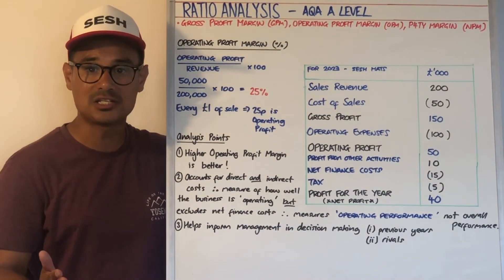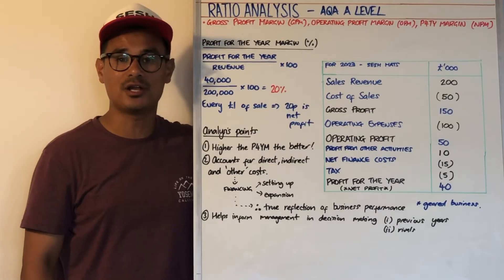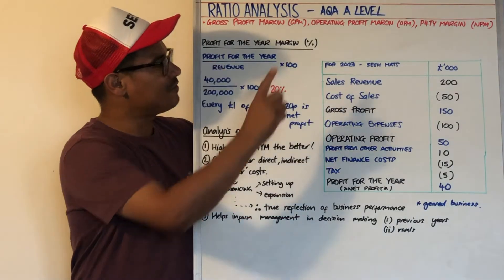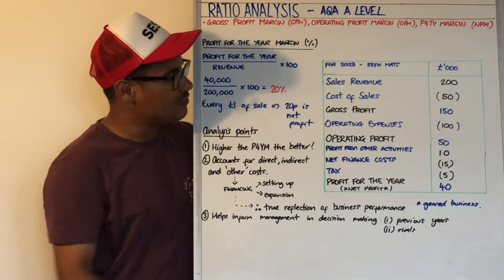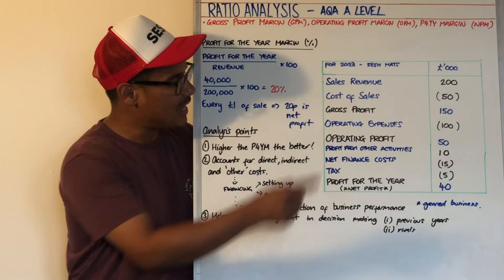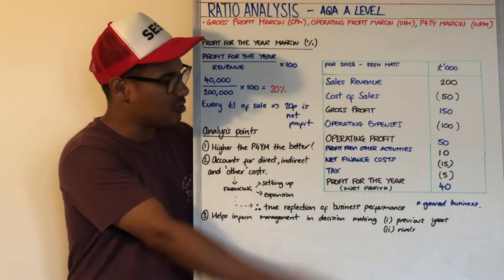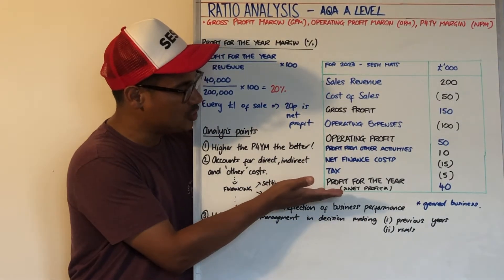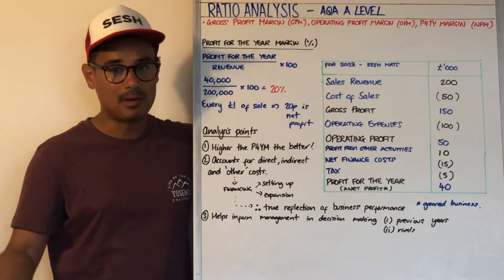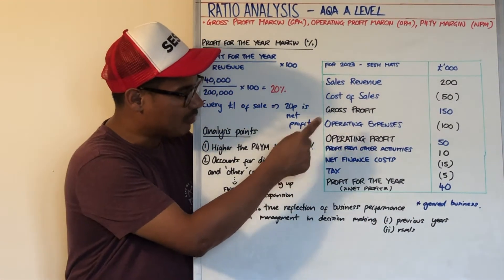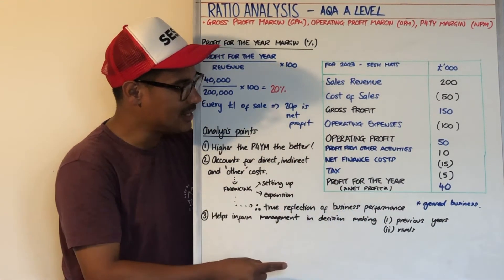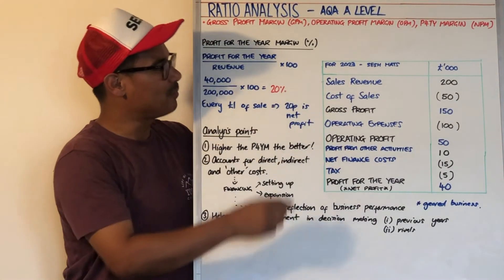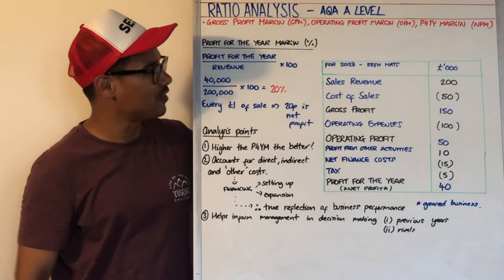Now let's move on to the last of those margins — the profit for the year margin, which I've always called the net profit margin; it's the same thing. To calculate profit for the year, you take sales revenue, subtract cost of sales, subtract operating expenses, add profit from other activities, subtract net finance costs, and subtract tax. A simpler way is: operating profit plus profit from other activities, minus net finance costs, minus tax. The formula is profit for the year divided by revenue, times by 100.